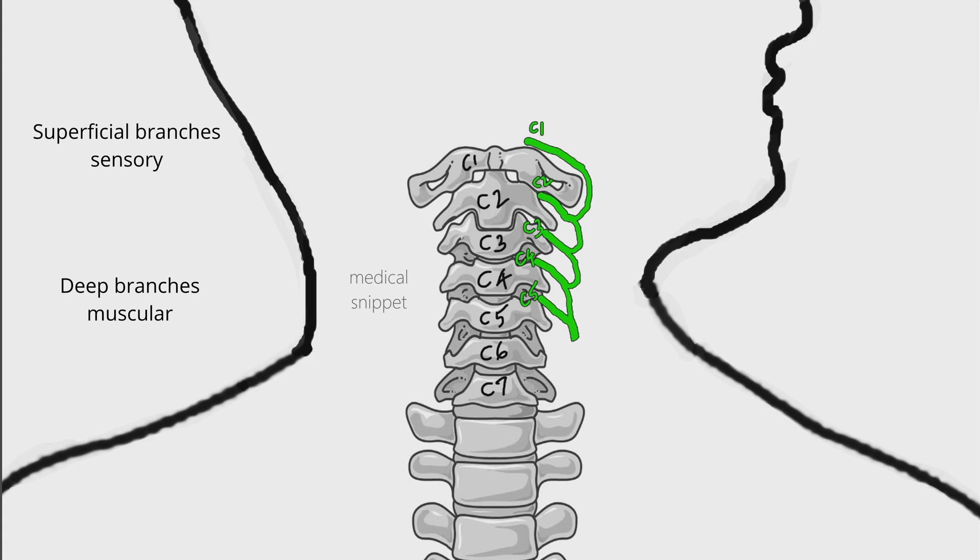There are four sensory branches. The sensory branches pass posteriorly in the neck. Three branches arise from the loop of C2 and C3. They are lesser occipital nerve, great auricular nerve, and transverse cervical nerve.